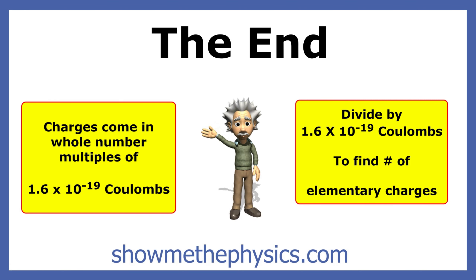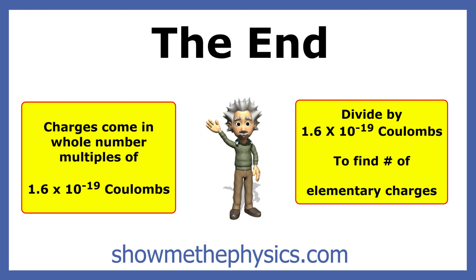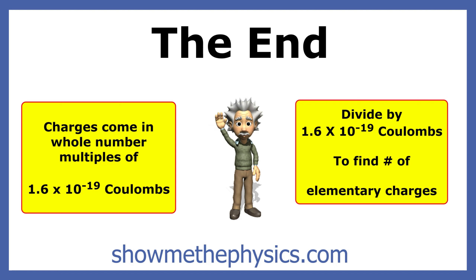In this presentation, you learned that the smallest charge known to exist in nature is called the elementary charge. It is the charge on an electron and a proton. This charge is 1.6 times 10 to the negative 19th coulombs, and all charges in nature are a whole number multiple of this charge. That number, 1.6 times 10 to the negative 19th coulombs, is on page 1 of your reference table.